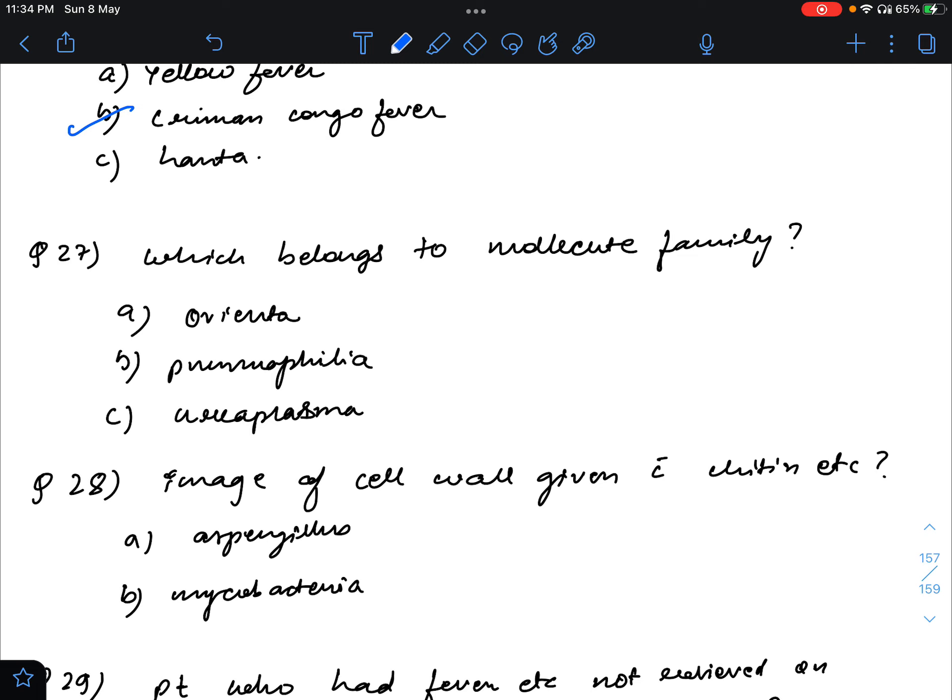Which belongs to mollicutes family? So this was a different question. And the answer to this is Ureaplasma. When I got this wrong, two things come under this: Ureaplasma and Mycoplasma. Ureaplasma and Mycoplasma will come under mollicutes family.